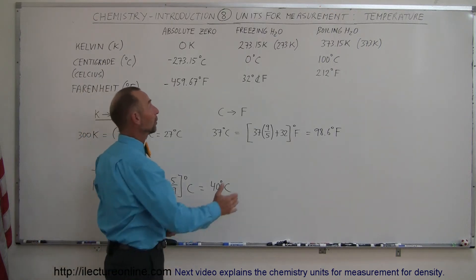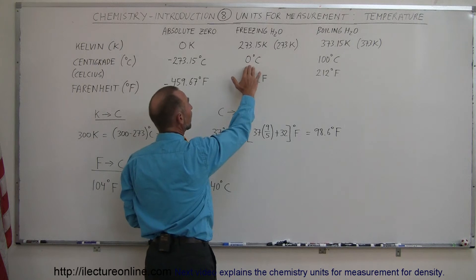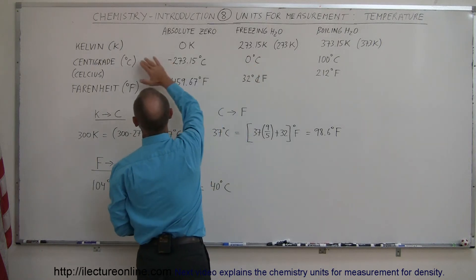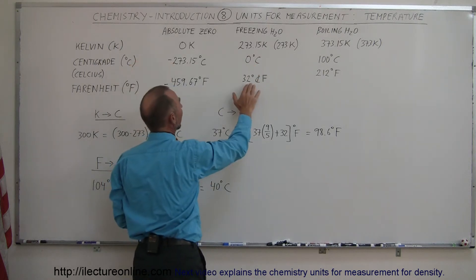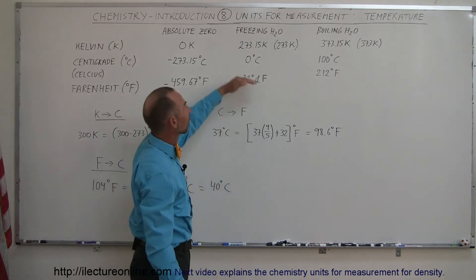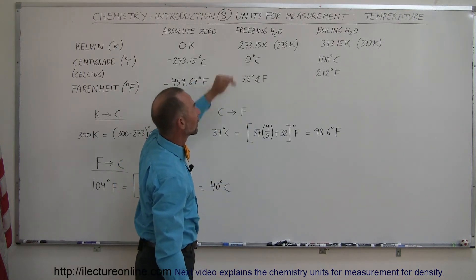At the freezing point of water, realizing again that zero degrees centigrade is the freezing point of water on the centigrade or Celsius scale, and the Fahrenheit scale is 32 degrees, and of course then on the Kelvin scale is 273 Kelvin.